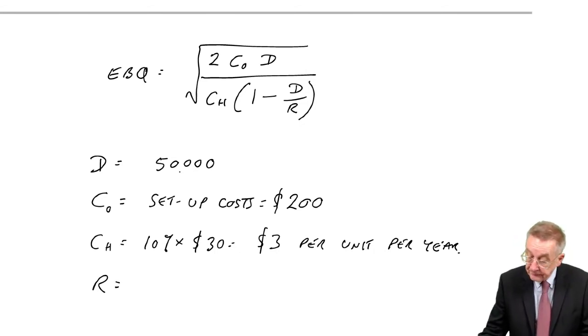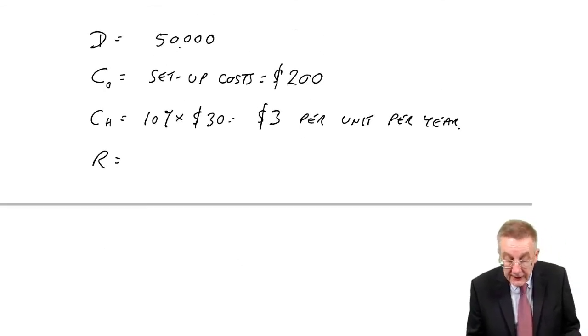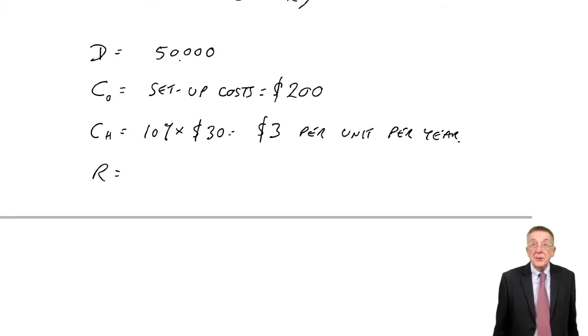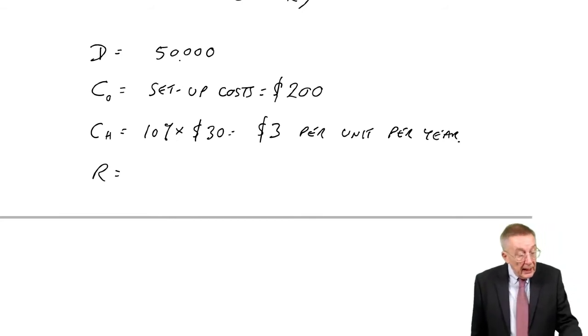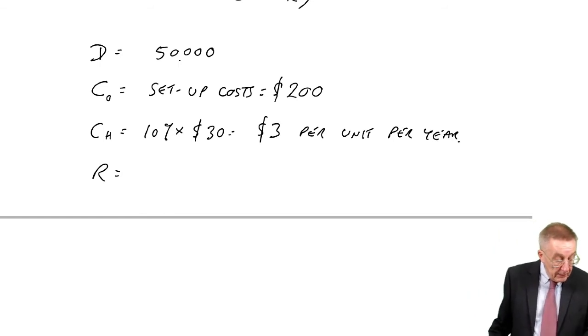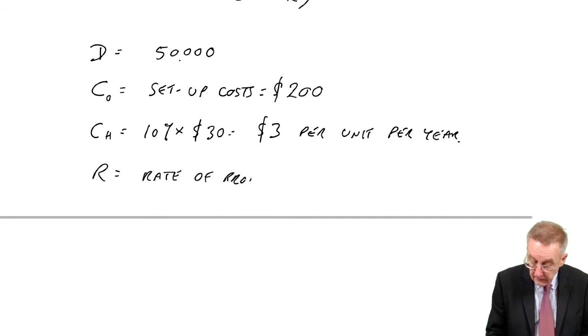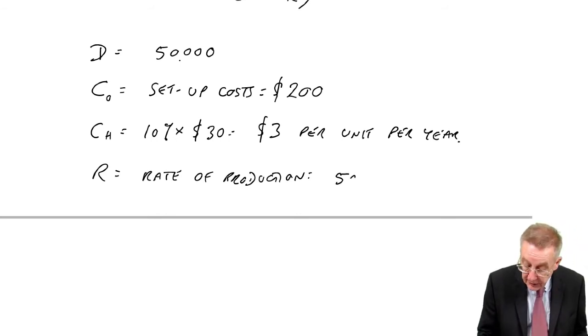And finally, the new symbol, R. R is the rate at which they can produce. I'll say again, they only produce what we want, which is here, 50,000. But how fast can they produce? How many are they capable of making per year? The rate of production per year. Here, it tells us, they're capable of producing at the rate of 500,000 per year.